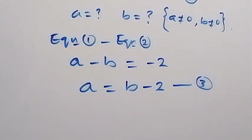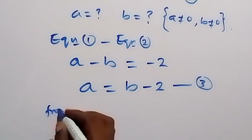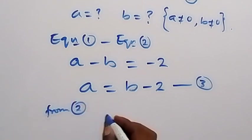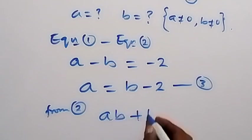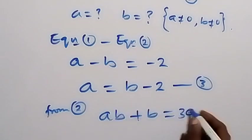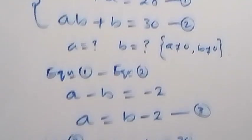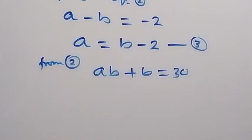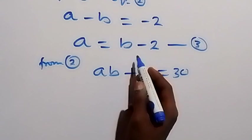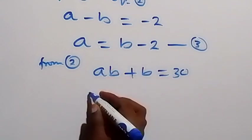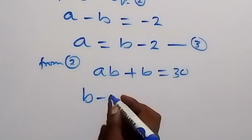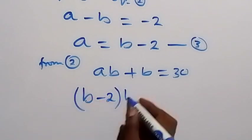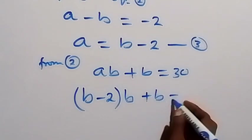Then, in the next step from equation 2, we have AB plus B equals to 30. And from there, we substitute A as B minus 2. So, we write B minus 2 now. We have B minus 2 times B plus B equals to 30.